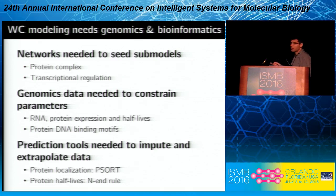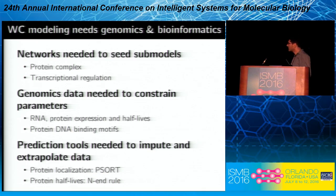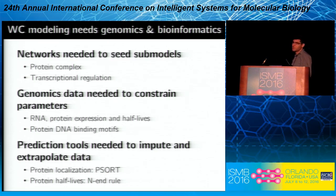Another way we're using bioinformatics is using prediction tools wherever possible to predict properties of proteins or RNA. For example, we're using PSORT to predict protein localizations and rules of thumb like the N-end rule to predict protein half-lives. We actually prefer prediction tools rather than raw data because it ensures we can get a complete dataset of parameters, whereas relying on experimental data may require imputing missing values.